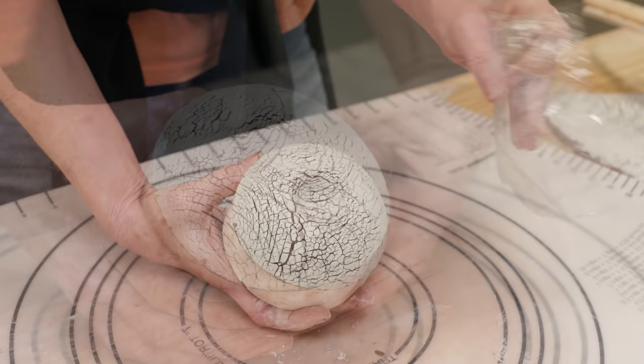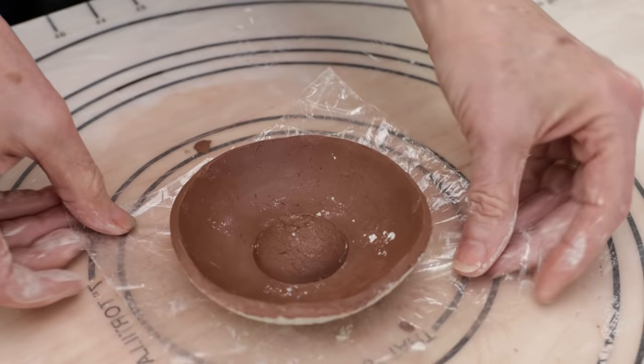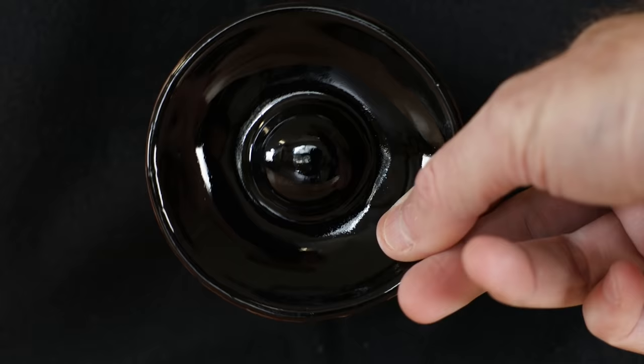When the bowl became leather hard I cleaned all the plaster specks from the surface. Now never fire any plaster in the kiln. Then I rounded the rim with my fingers. I bisque fired this and glazed it and then fired it to cone 5. I love this little dipping bowl.